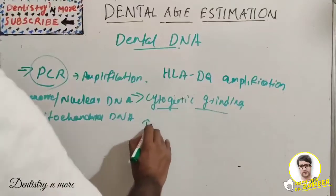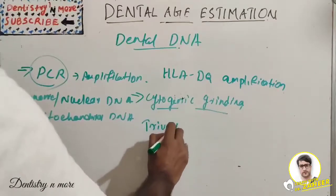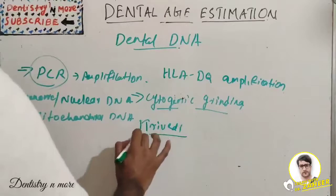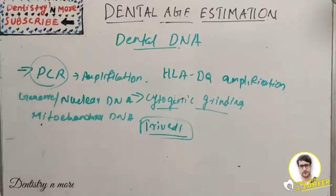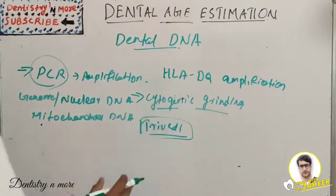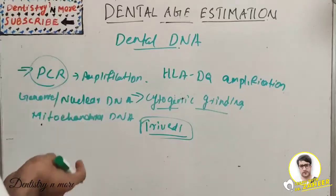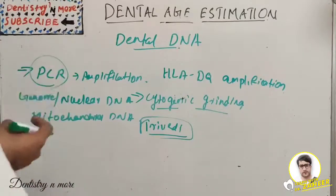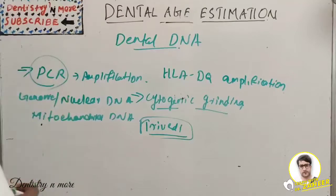According to Trivedi, he suggested a less destructive method for DNA isolation unlike cryogenic grinding. He suggested opening of the root canals, scraping the pulp area with a nasopharyngeal needle, then subsequently flushing the tissue debris.